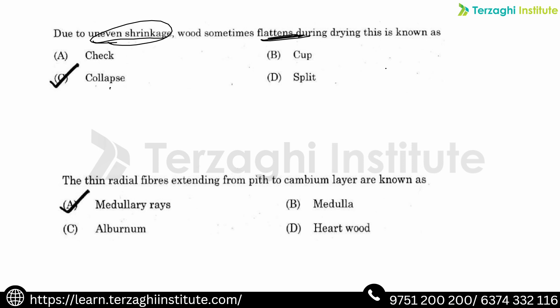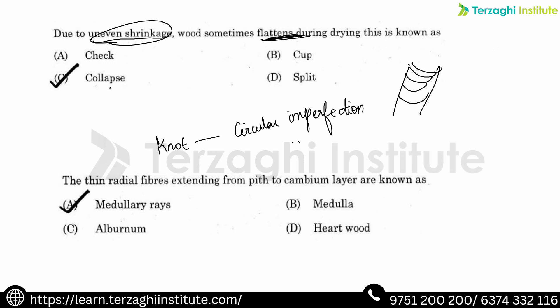A cup defect creates a hollow, curved shape in the timber. Circular imperfections are very common in timber. Circular or cup defects are hard to work with, so this is an important defect to note.